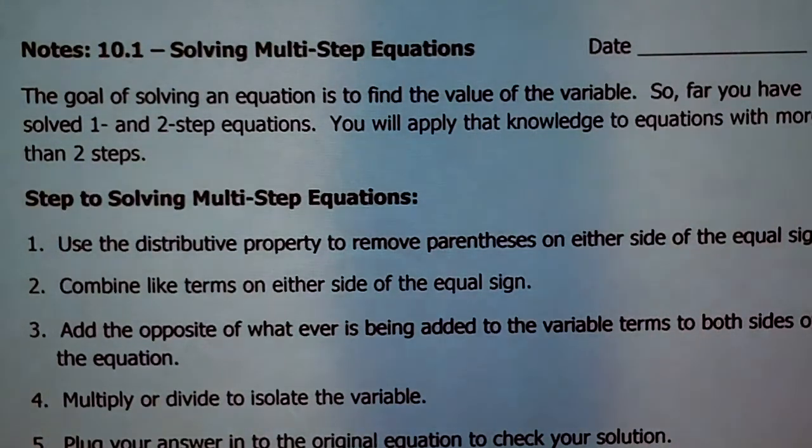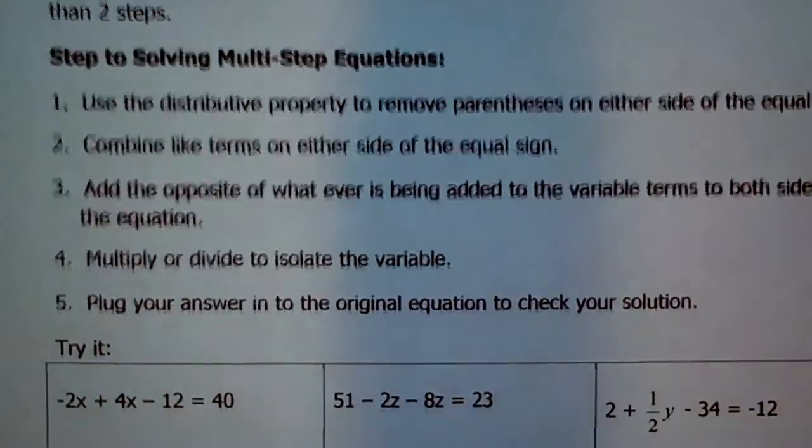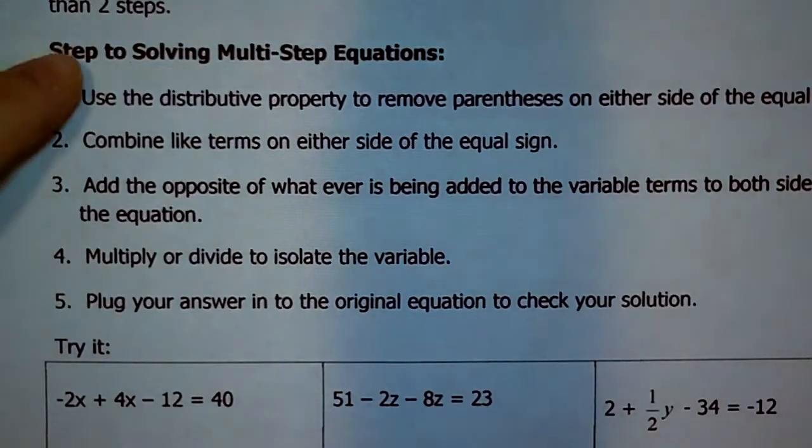So, the goal of solving an equation, it's still the same exact thing. We want to find the value of the variable. So far, you've solved one and two-step equations. You've had a couple situations where there's parentheses. Now, you're going to have to apply that knowledge to equations that have more than two steps. So, I give you a list of steps here. I think the examples are what's going to really help us, but we can kind of go through, and you'll use this as your checklist.